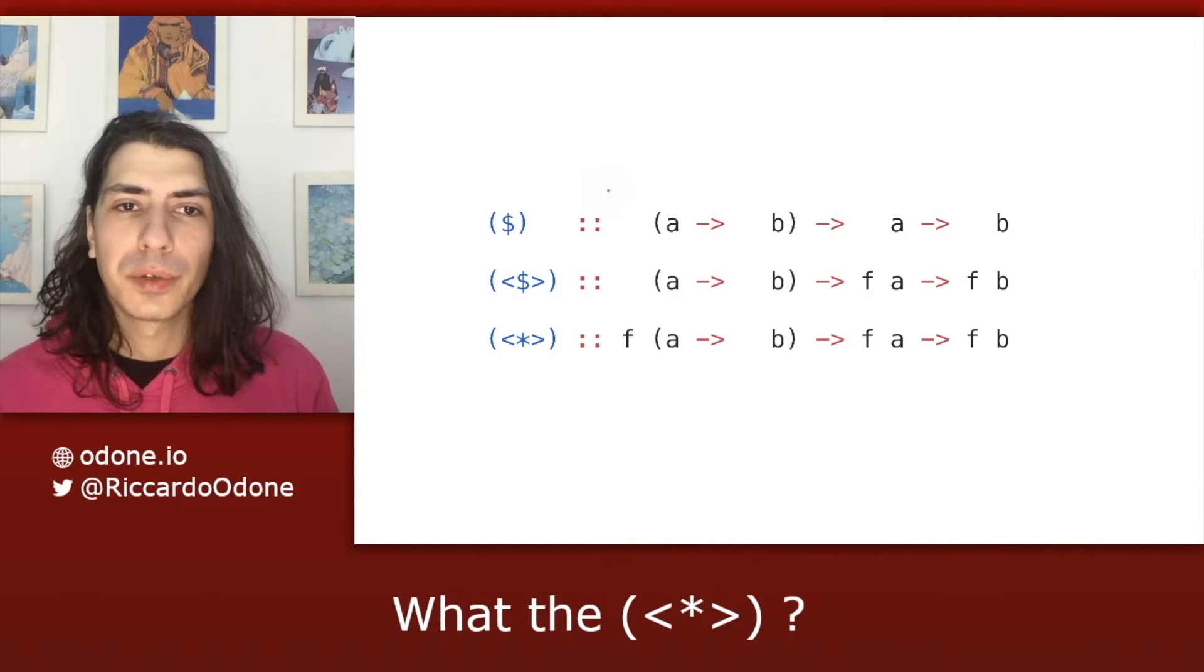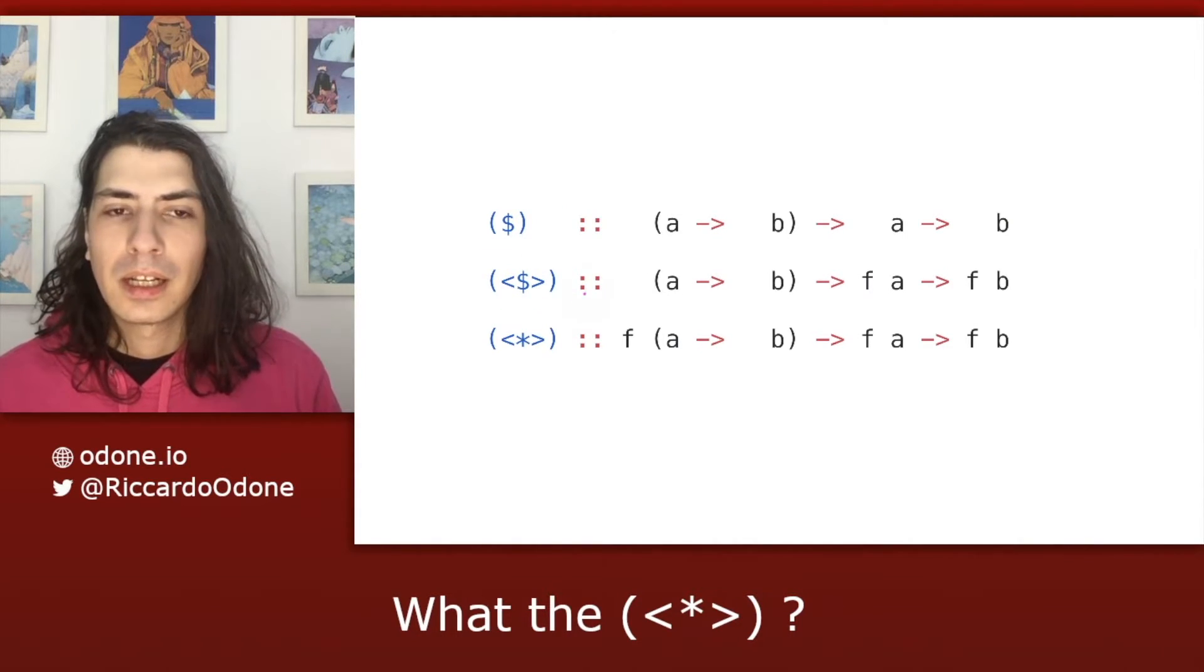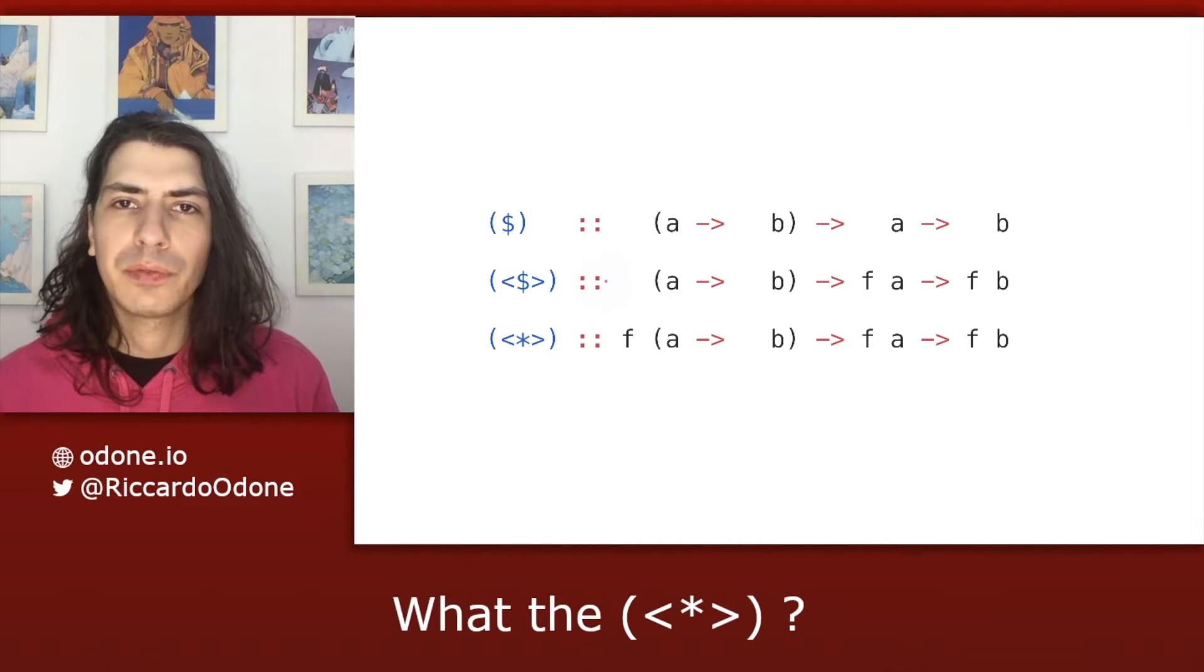In the previous two videos, we covered function application and fmap. Let's see them compared to the new applicative functors sequential application operator. Now, if you remember from two videos ago, we saw that the function application operator is just taking a value of type a and applying it to the step function to produce the output of type b, which is exactly what we need.